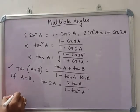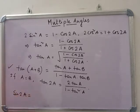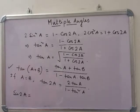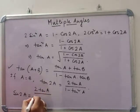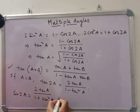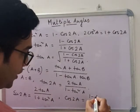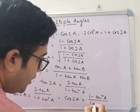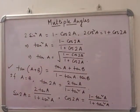We know sin 2A = 2 sin A cos A. Writing this in terms of tan, we get sin 2A = 2 tan A / (1 + tan²A), and cos 2A = (1 − tan²A) / (1 + tan²A). This is a simple relation connecting tan A with sin 2A and cos 2A.